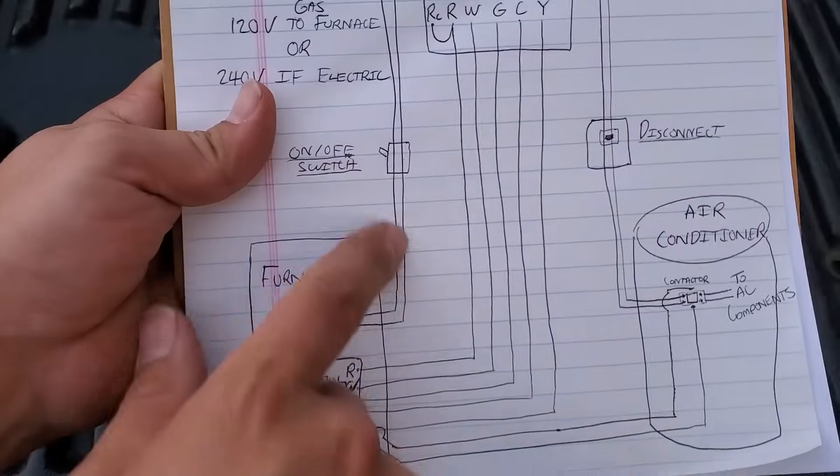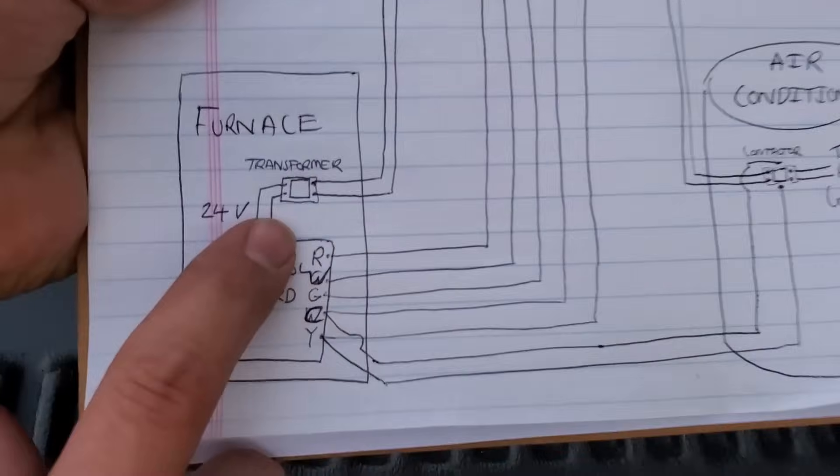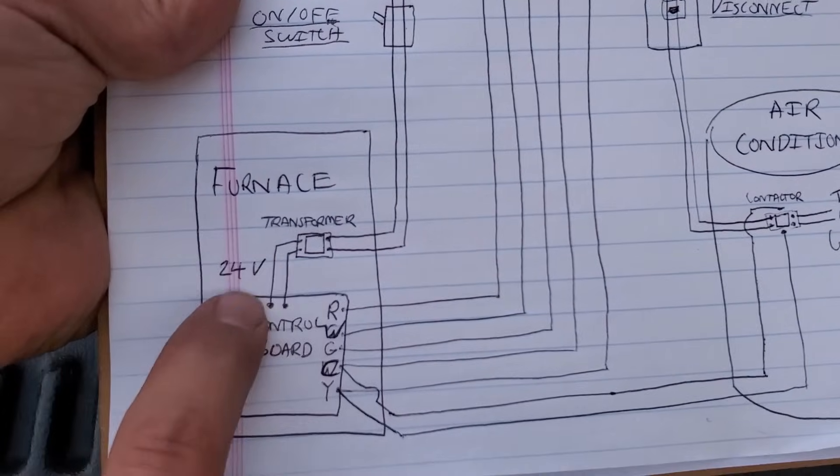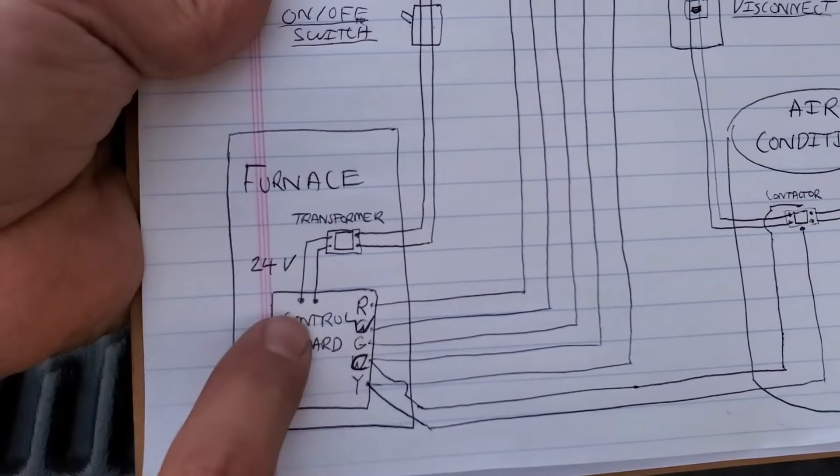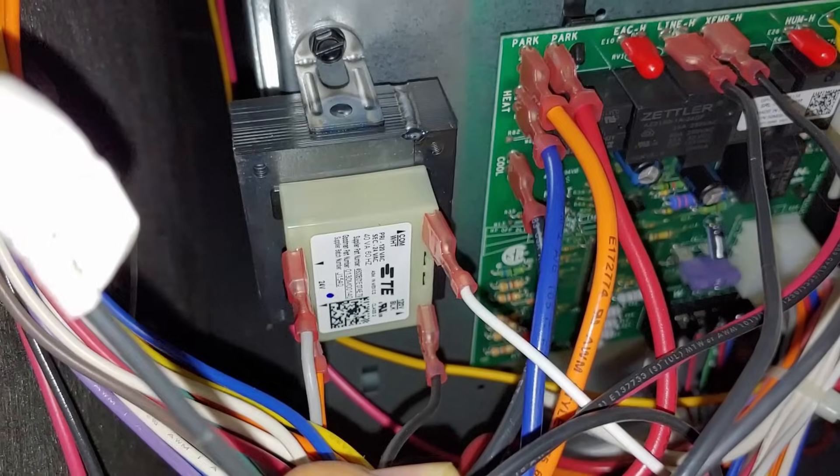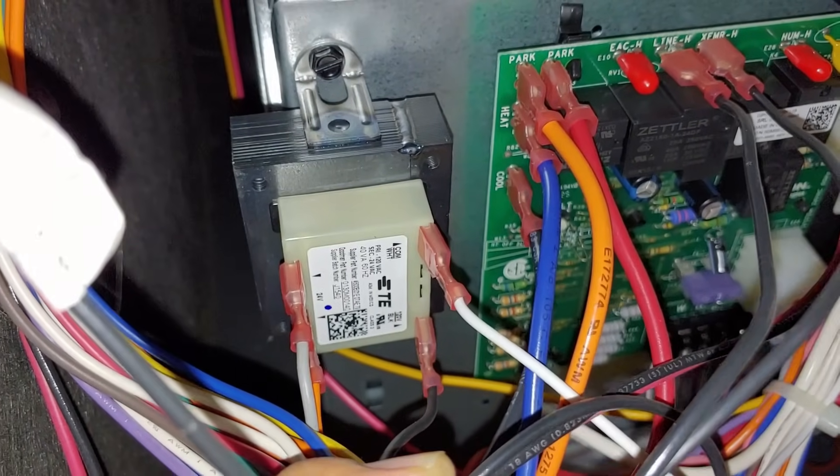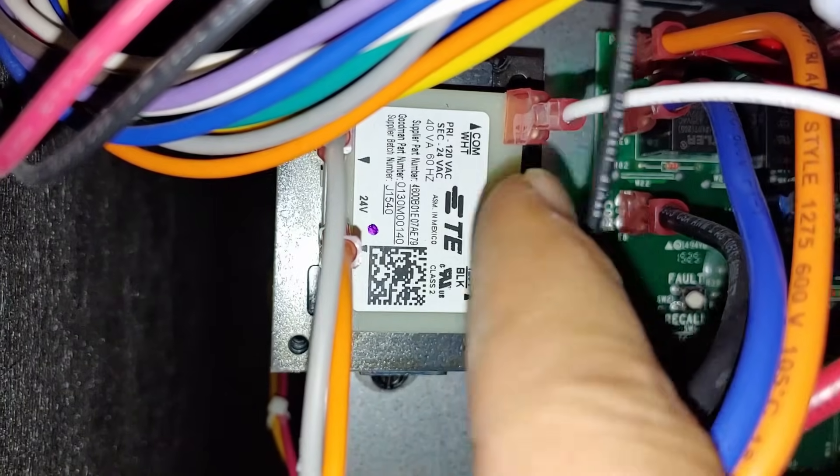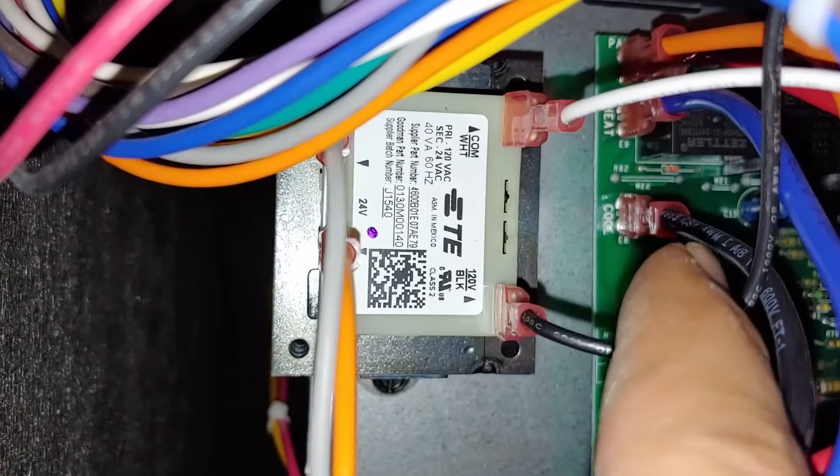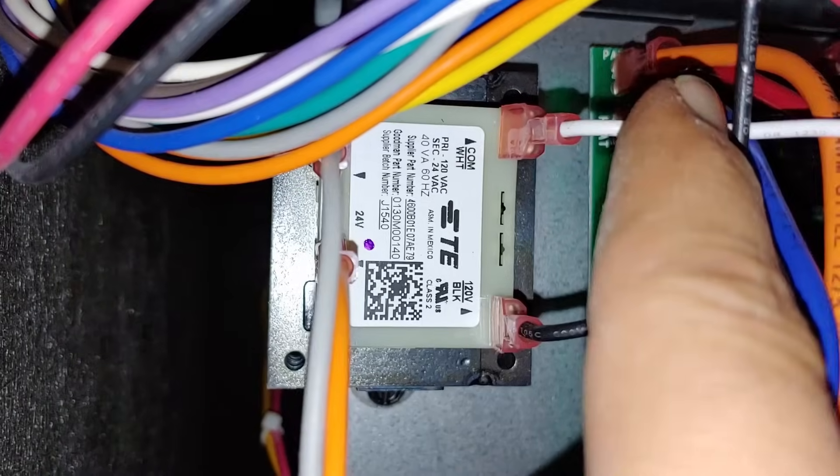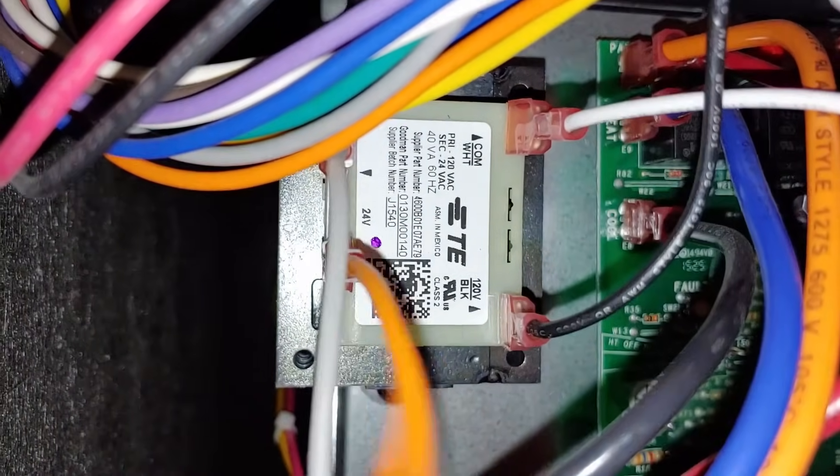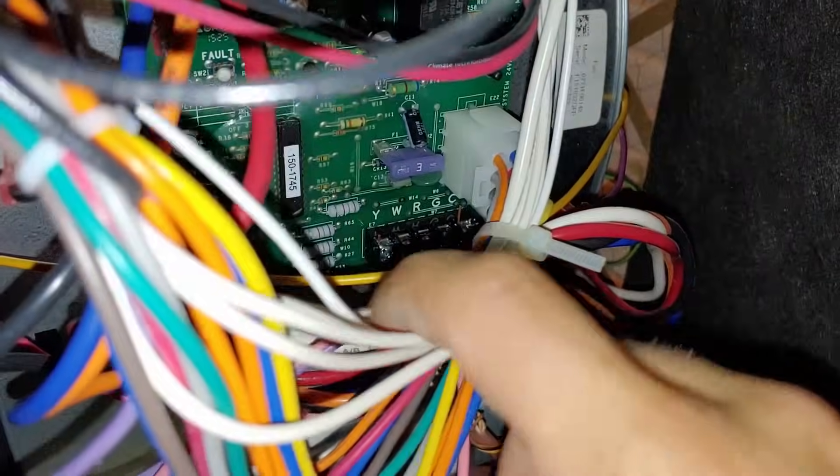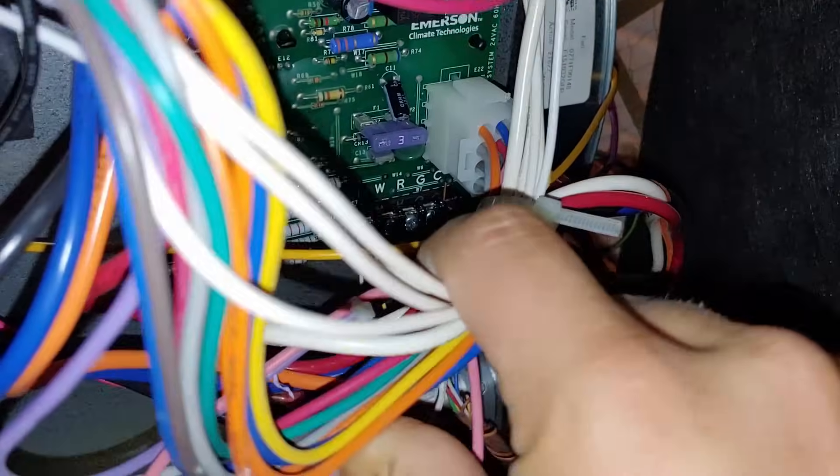Our 120 volts comes into the furnace transformer, which is right here on my diagram, which transforms it down to 24 volts, which then goes onto the control board. Right here is that transformer, and you can see how we have 120 volts coming in here up on the top, this is the primary side of the transformer. So 120 volts in our common, and then coming out of the bottom we have our 24 volts which then goes on to the control board through this molex plug.